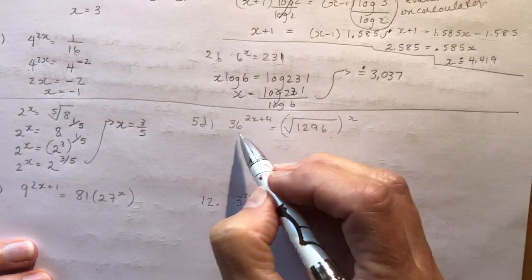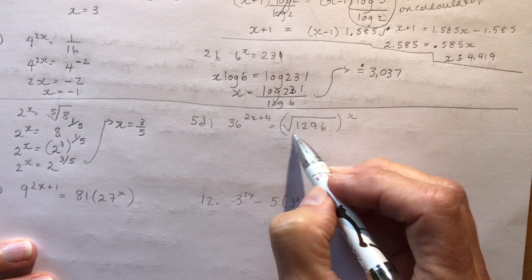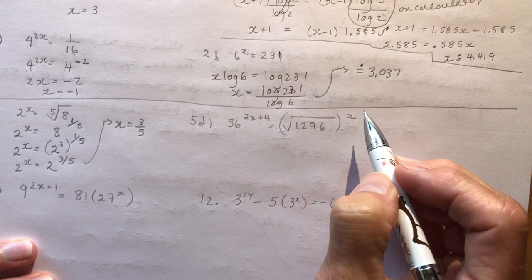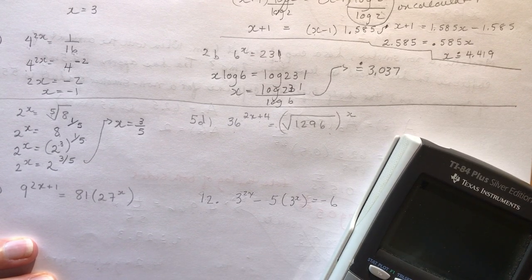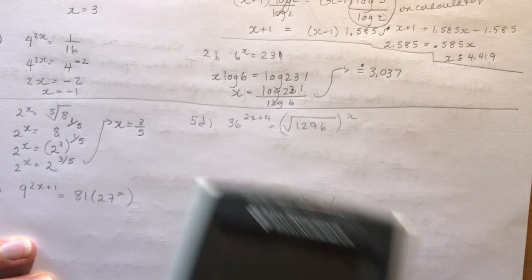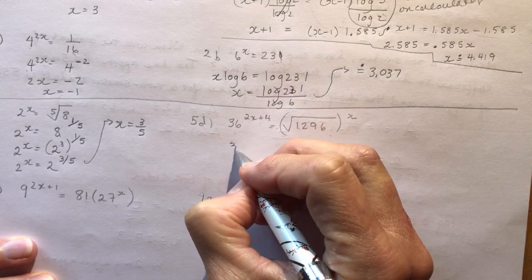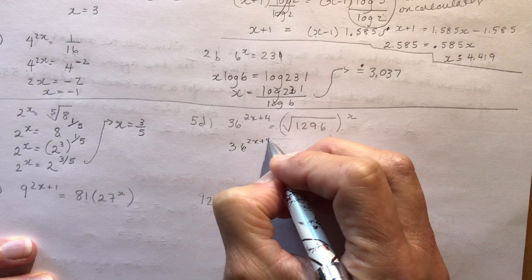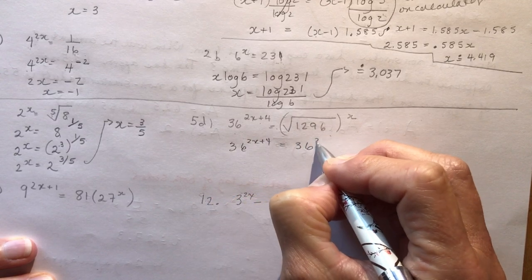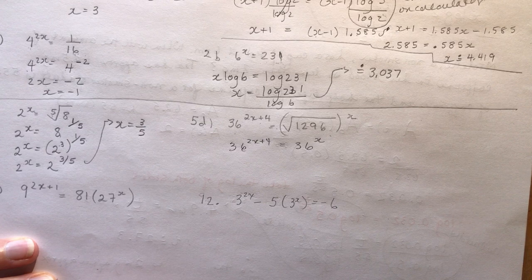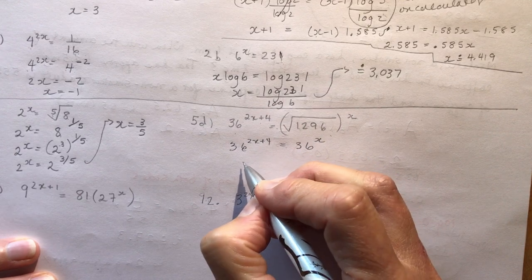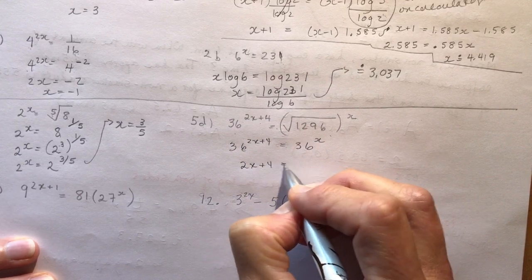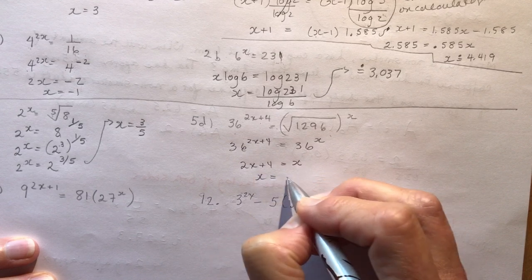Next: 36 to the (2x+4) equals the square root of 1296 to the x. Check if the square root of 1296 is a nice number — it is, it's 36. So both sides have base 36: 36 to the (2x+4) equals 36 to the x. Equating exponents: 2x plus 4 equals x, so x equals negative 4.